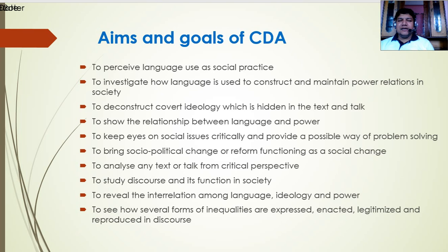Another aim is to reveal the interrelation among language, ideology, and power — the triangular relationship between these three. How ideology is reflected through text and talk and used to exercise power; whether power comes only from the upper level of society or circulates everywhere. Michel Foucault says power does not always come from the upper ladder of society — power is everywhere. The aim is also to see how several forms of inequalities are expressed, enacted, legitimized, and reproduced in discourse.